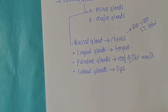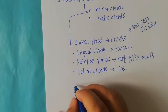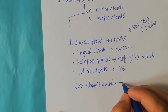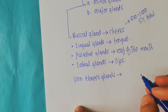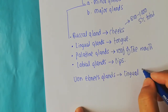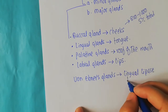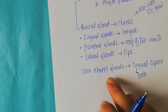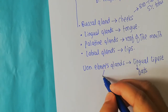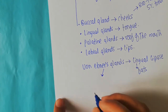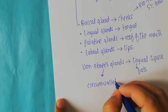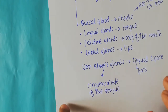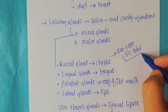One of the most important minor salivary glands is the von Ebner's gland. This gland is important because it creates a very important enzyme known as lingual lipase, which is responsible for the breakdown of fats present in food. The von Ebner's gland is found in the circumvallate region of the tongue.